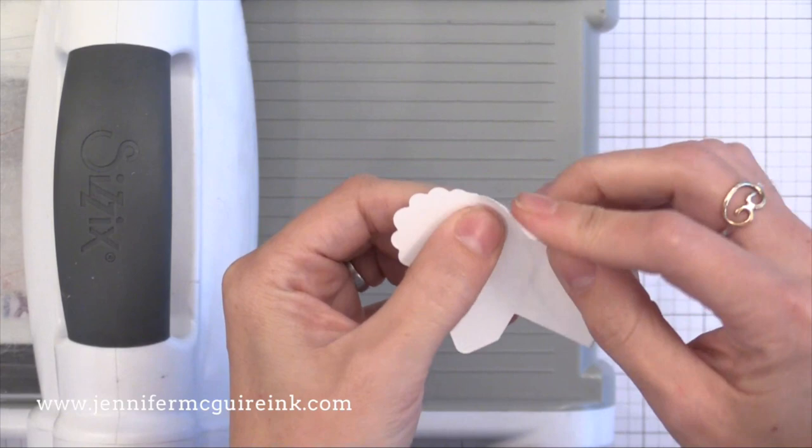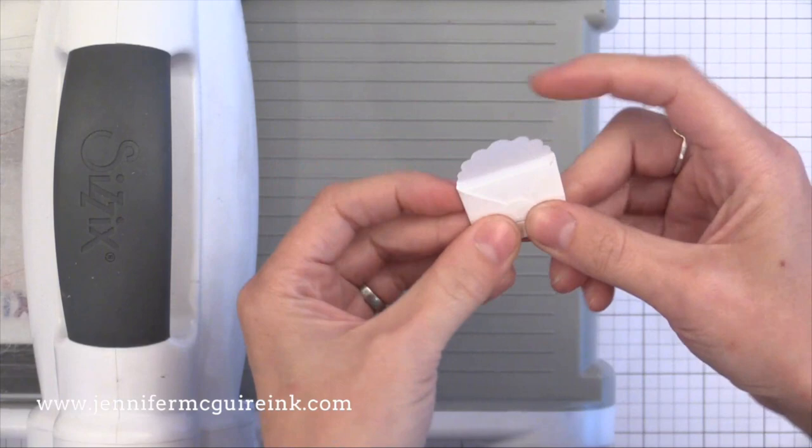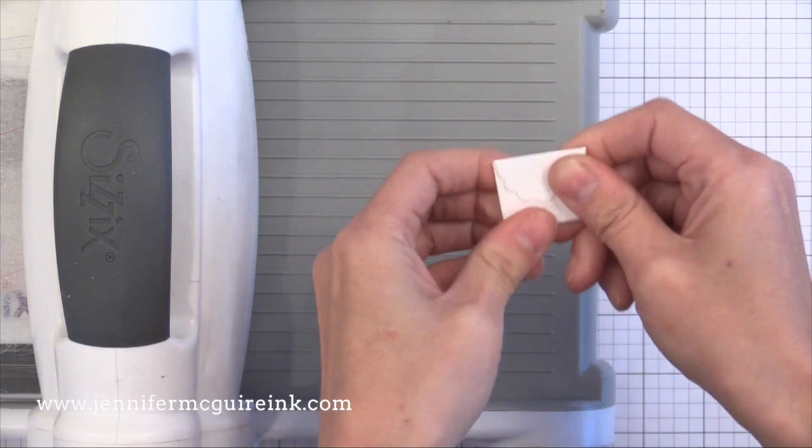Basically the die creates score lines in various places on the piece. All you have to do is fold along those score lines and then you'll have this little mini envelope. When it folds up it looks like an envelope, but when you open it up you can see this long message that is revealed inside. It's a great place to write a little note.